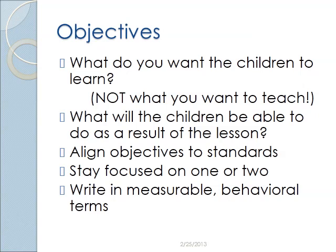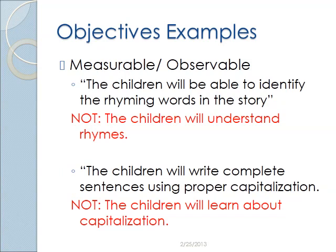Now, the next part about your objectives is how to write them. You're going to write in measurable, behavioral terms. Here are some examples. We want to word the objective in a way that we can evaluate it. For example, we would say the children will be able to identify the rhyming words in the story.